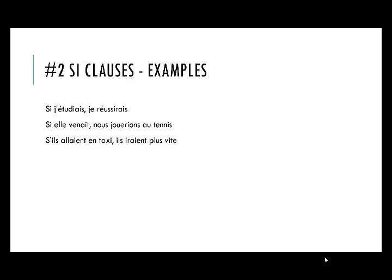We can tell that the verb in the main clause is conditional in two ways. First, we can see that R from the infinitive or the irregular future stem: réussirais, jouerions, iraient — that R signals future or conditional. The other key point is that in si clauses, you will never find the future or conditional tense inside the si clause itself; those tenses only appear in the main or result clause.